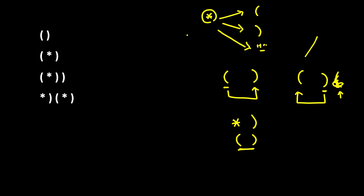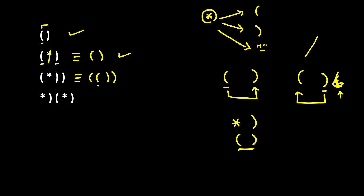Looking at the examples: in the first one, each opening bracket has a one-to-one closing bracket after it, so it's valid. In the second, the closing bracket matches the opening one and the asterisk is converted to empty string, so it's balanced. In the third, converting the asterisk to an opening bracket balances the expression.